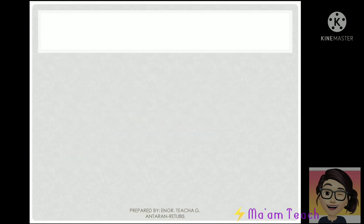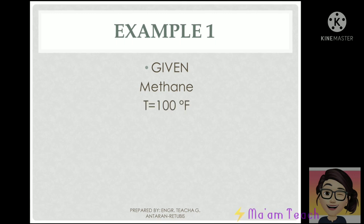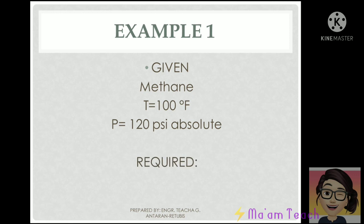So in order to do this, let us first write the given. Based on the problem, the material is methane, the temperature is 100 degrees Fahrenheit, and 120 psi is the absolute pressure. From this, we are asked to solve for the specific weight, the specific volume, and the density.